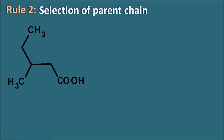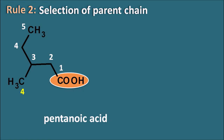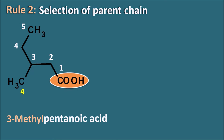Let us consider one example where carboxylic acid is the principal functional group. Numbering 1, 2, 3, 4, 5 gives a 5-carbon chain containing the carboxylic acid. Alternatively numbering 1, 2, 3, 4 gives only a 4-carbon chain. The parent chain must be the longest one that includes the principal functional group, so the 5-carbon chain is selected — pentanoic acid, with a side chain at the third position: 3-methylpentanoic acid.